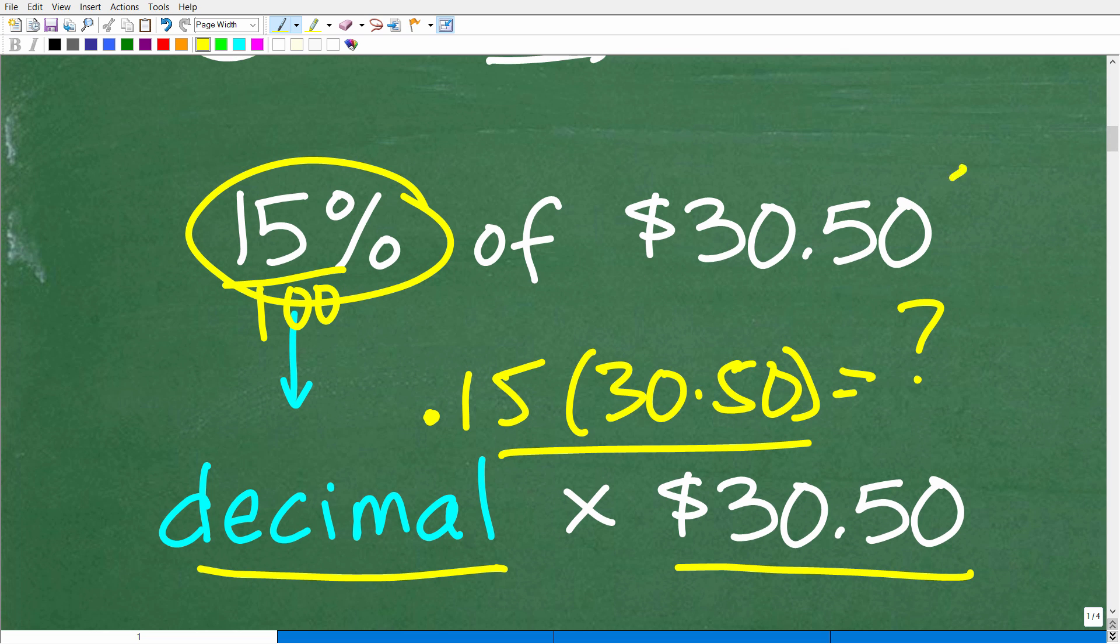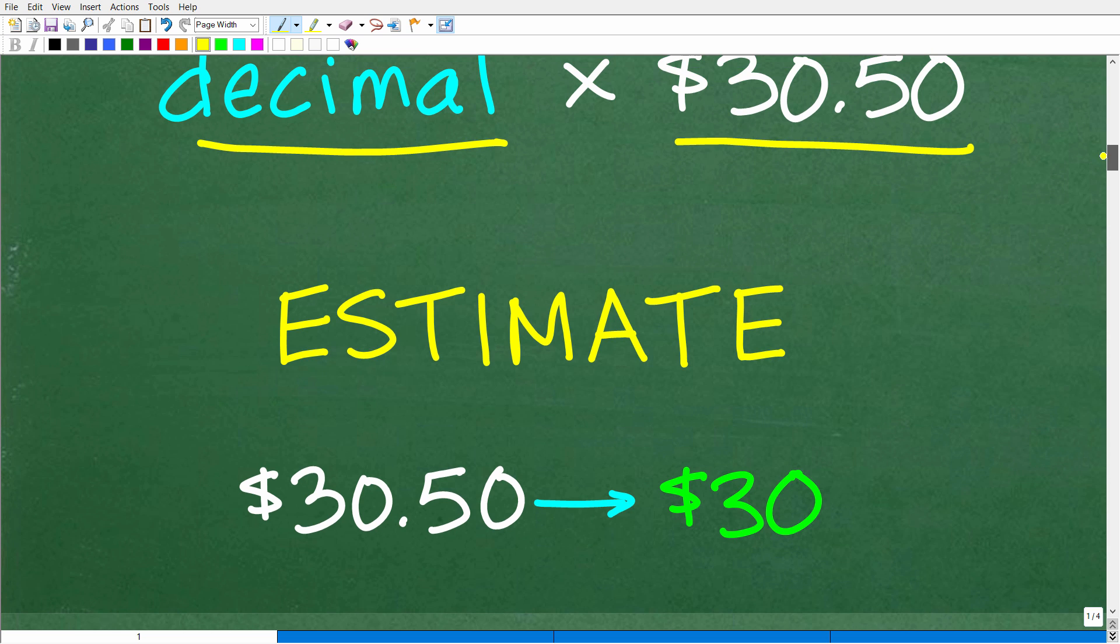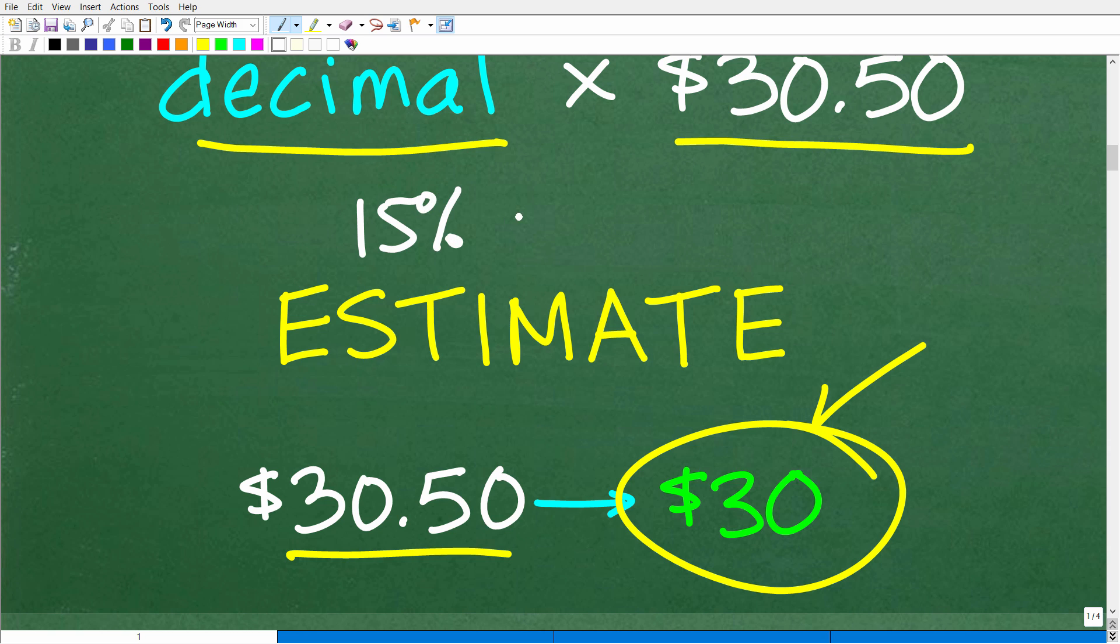So what can we do here to make our life easier? Well, if we want 15% of $30.50, if you're looking at this and say, how about we just round down and make that $30.50? We'll just think of it, it's pretty close to $30. So we'll just think of this problem as 15% of 30. So if this is what you're thinking, you are indeed thinking right. Now, in terms of mental math, we want to make these calculations very easy to do in our brain.